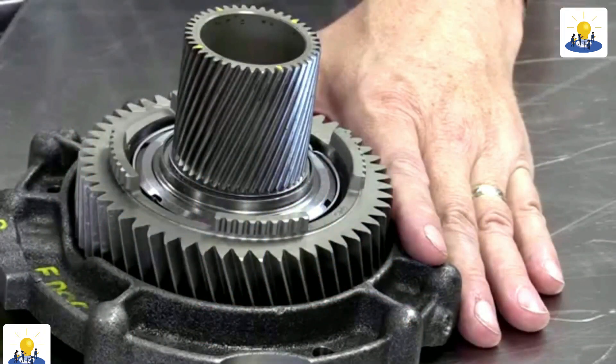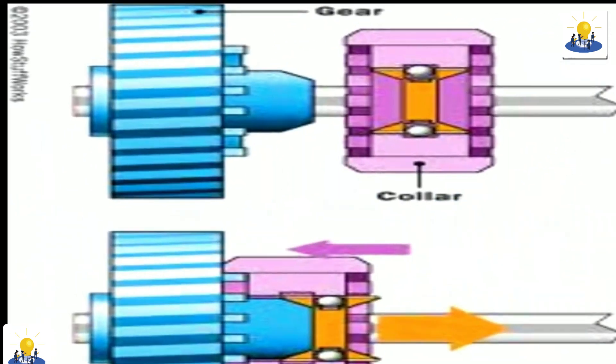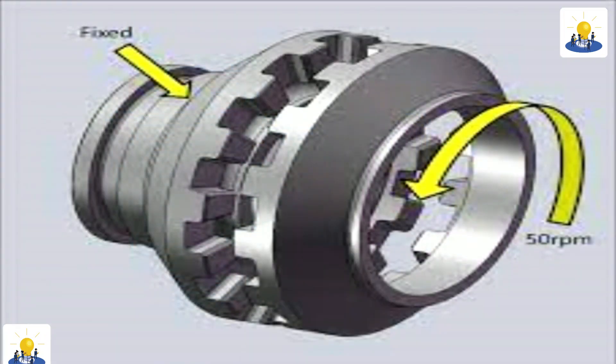However, the clutch can move back and forth on the shaft to either engage or disengage the splines. This movement is controlled by a selector fork that is linked to the gear lever.